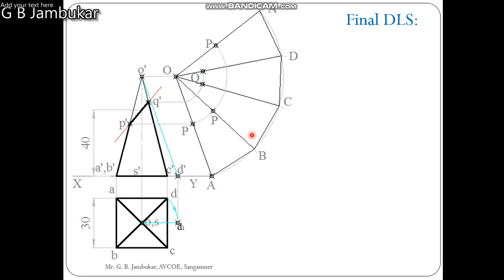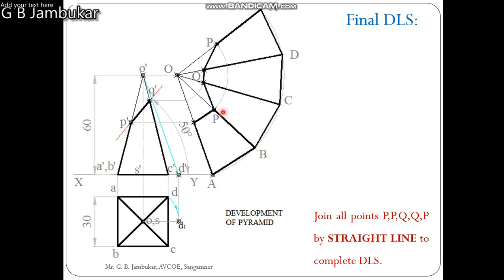Final DLS will be join all the points that is P, P, Q, Q, P by the straight line and then P to A, A to D, D to C, B, A, and A to P. Again, all these edges are visible in the final development.